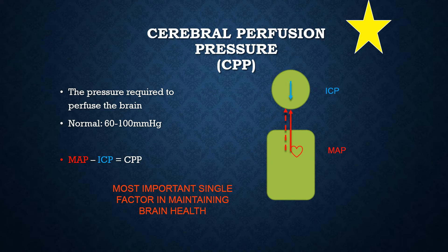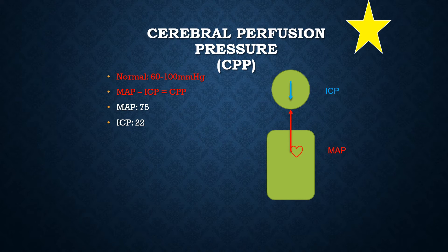Think about this: if there is a low MAP, that's going to reduce our CPP because we aren't sending enough pressure to the brain. Or if our MAP is just fine but our counter pressure — the ICP pushing back against the MAP — is really high, that's going to reduce perfusion as well. How hard is the heart pushing blood to the brain, minus how hard the brain is pushing back? Bottom line: we need to make sure that the brain tissue is getting blood. So you can see why CPP is the most important factor when looking at maintaining the health of that brain tissue.